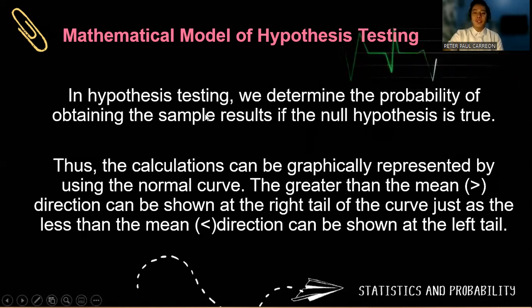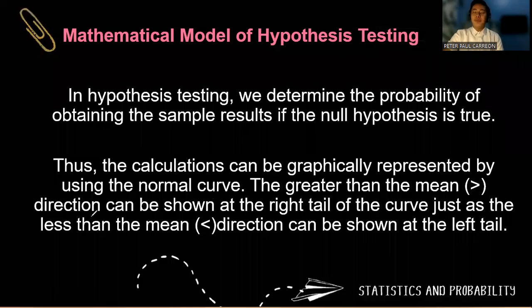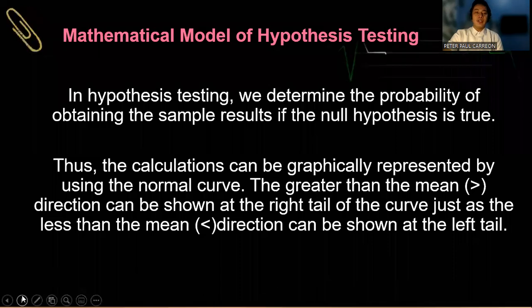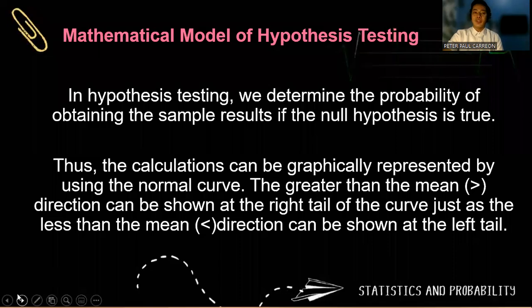So in the distribution, if it is greater than the mean, then the direction can be shown on the right tail of the curve. While if it is less than the mean, then it can be shown on the left tail of the normal curve. So don't forget that the best model is always the normal curve.